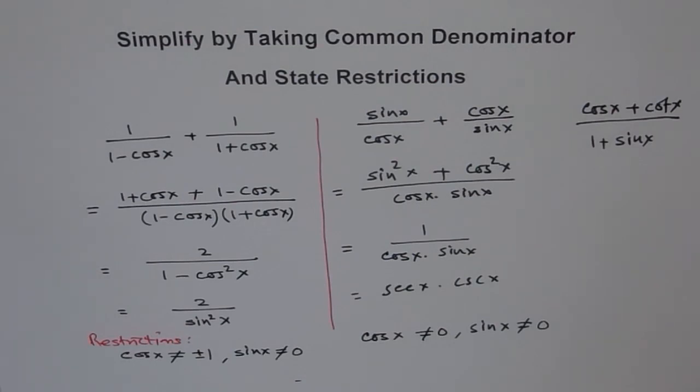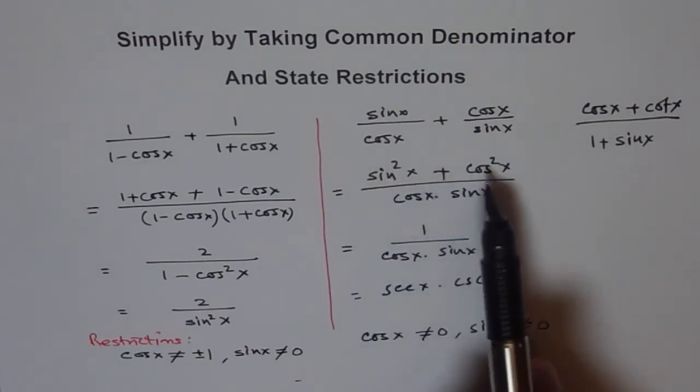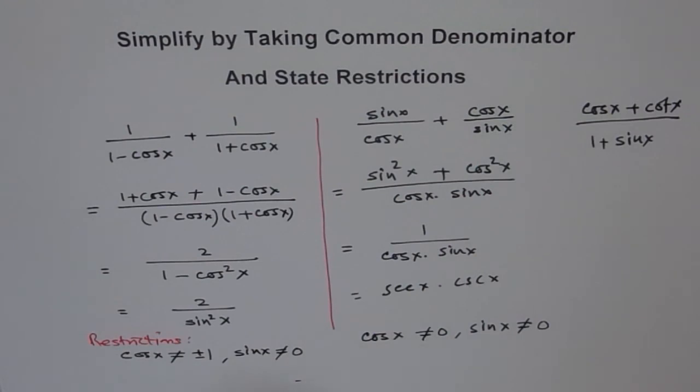So these are very simple solutions to rational kind of trigonometric functions, expressions. And here we are emphasizing on two things. One is trying to use our identities like sin square x plus cos square x. And the emphasis is to understand the restrictions since the denominator cannot be 0. Thank you.